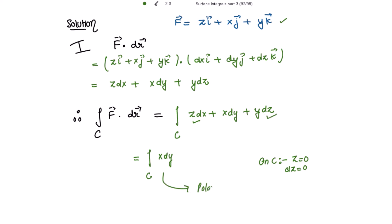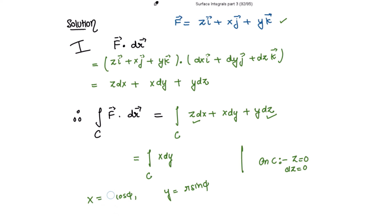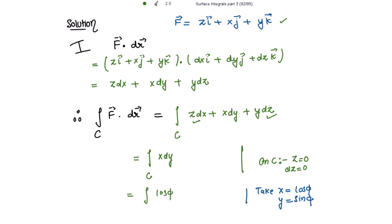Changing this to polar coordinates. For polar coordinates, we take x equal to r cos φ and y equal to r sin φ. Because C is the unit circle, the radius is 1, so we take x to be cos φ and y to be sin φ. So this is the line integral: x is cos φ, and dy becomes cos φ dφ. The limits of φ are from 0 to 2π for the circle, so the integrand is cos² φ.